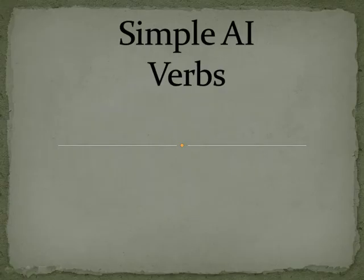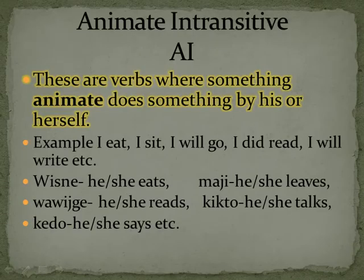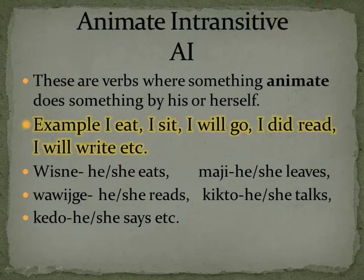Simple AI verbs — animate and intransitive verbs. These are verbs where something animate does something by his or herself. Examples would be: I eat, I sit, I will go, I did read, I will write.